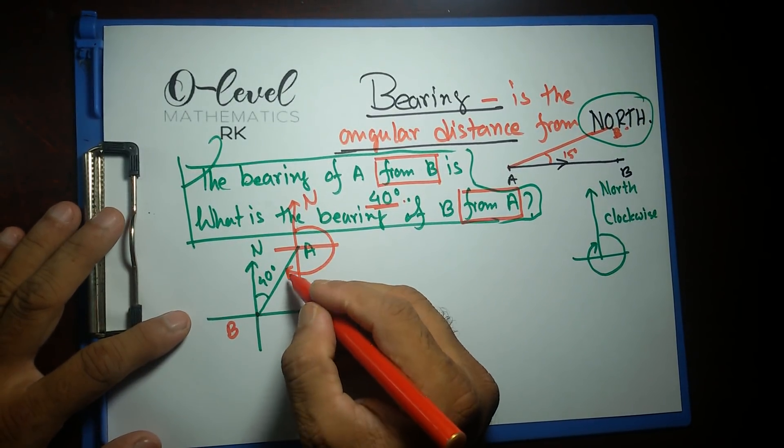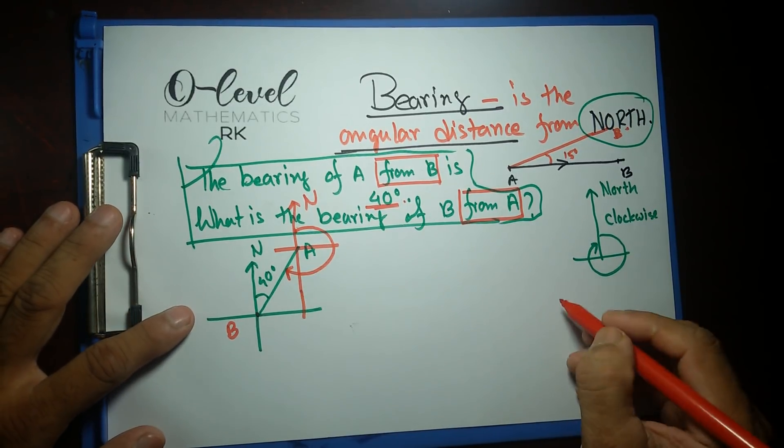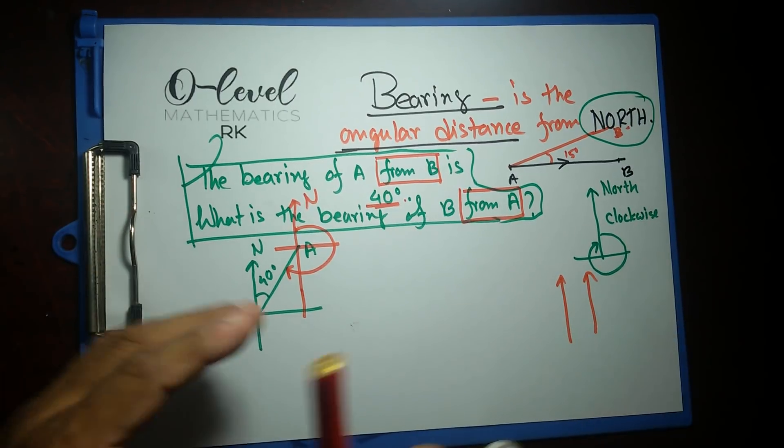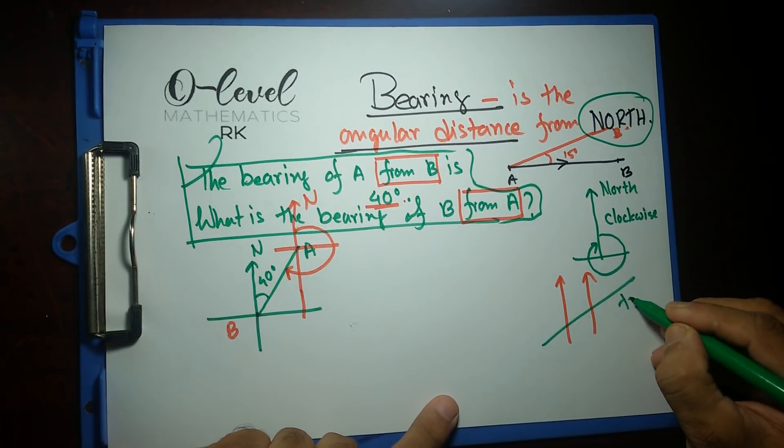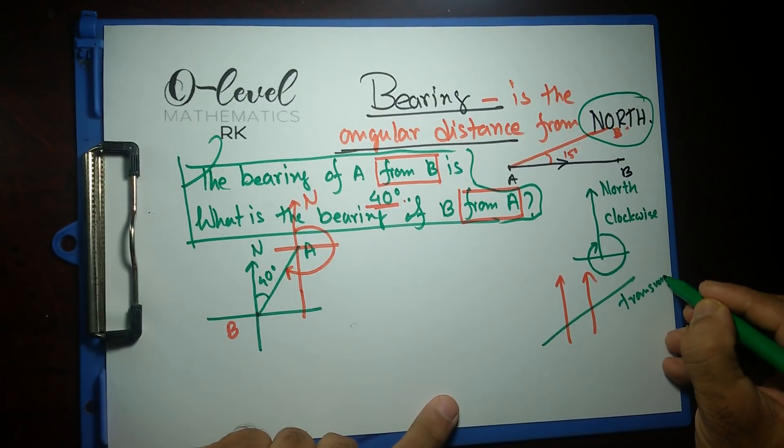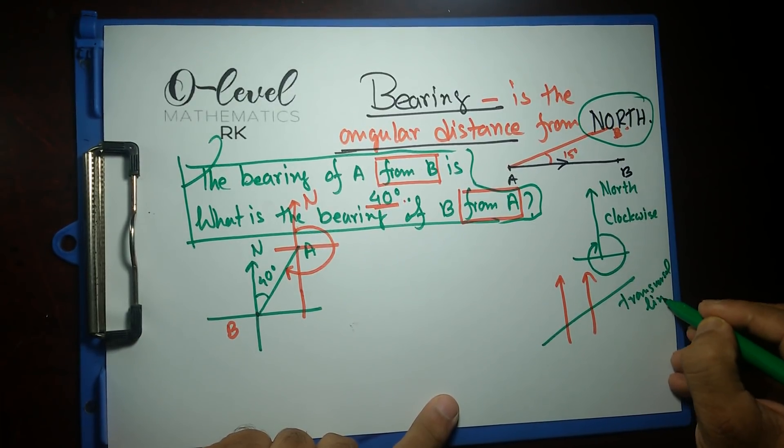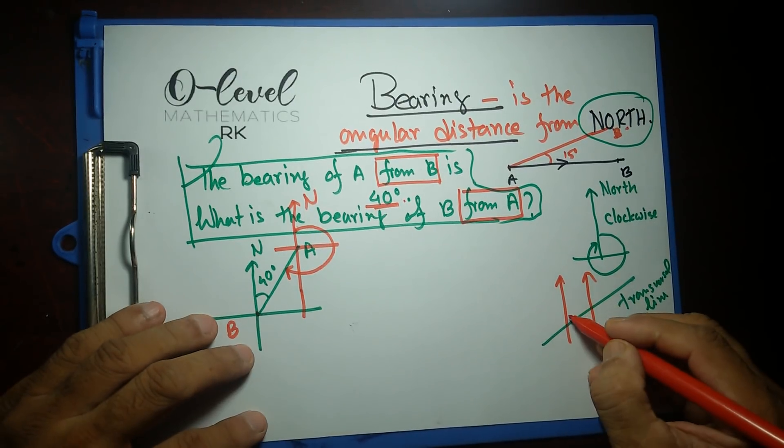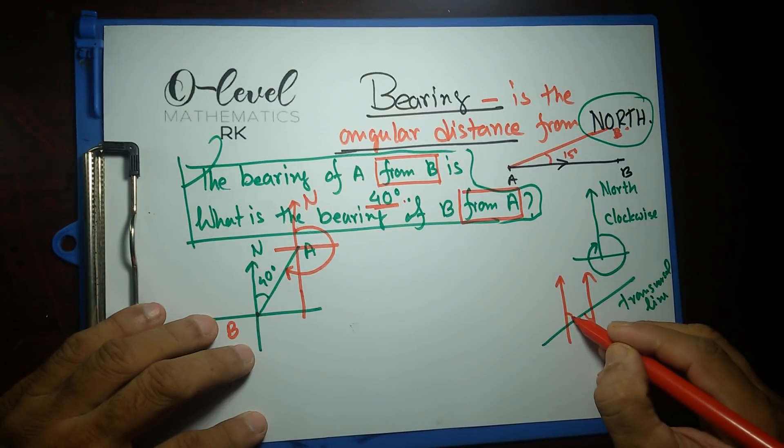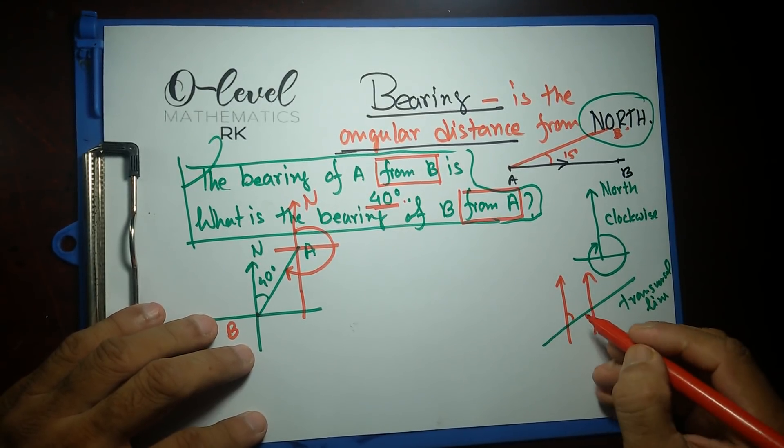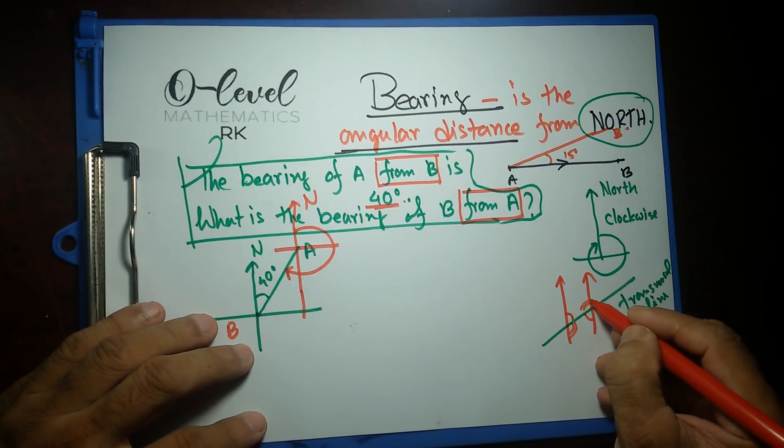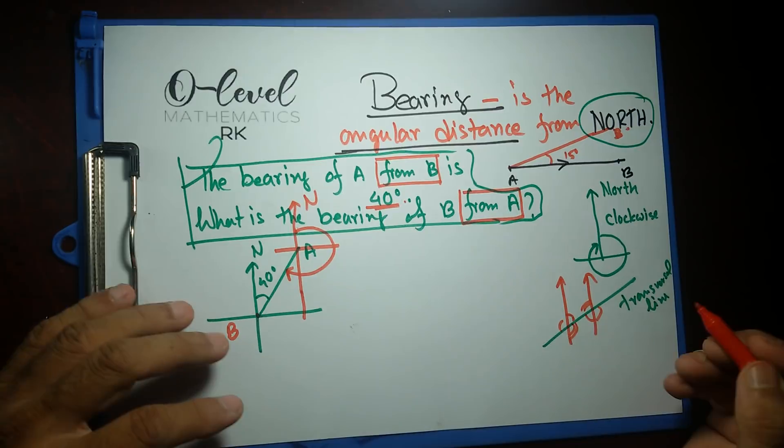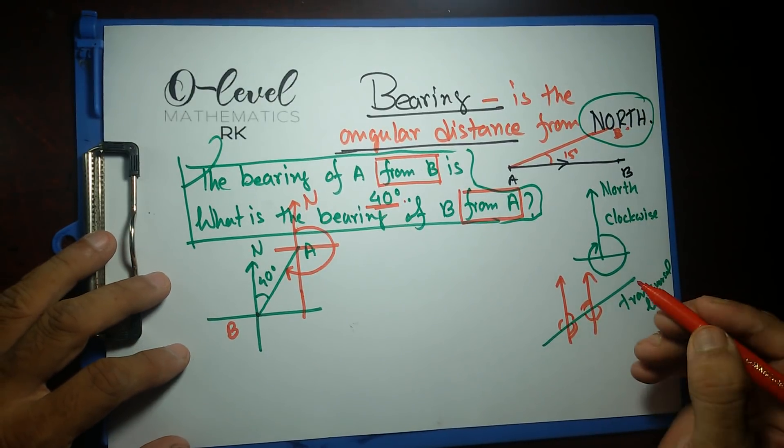Now you have to understand some of the geometrical concepts. Whenever we have two parallel lines, and if I have a transversal line like that—a transversal line is a line that intersects a series of parallel or non-parallel lines—these two angles are known as alternate interior angles. These two as well, alternate interior angles. And this and this are alternate exterior angles. I'll explain that in some other videos of mine.